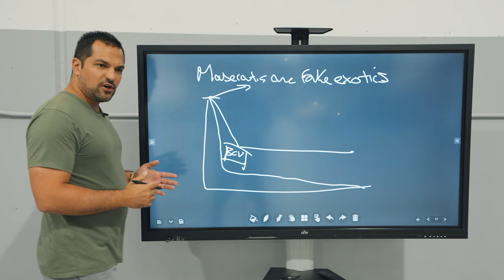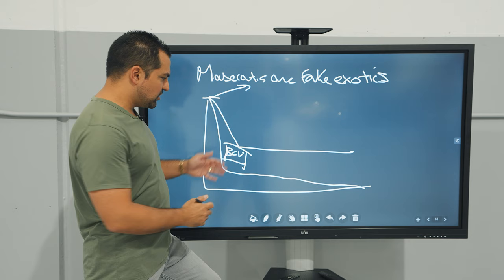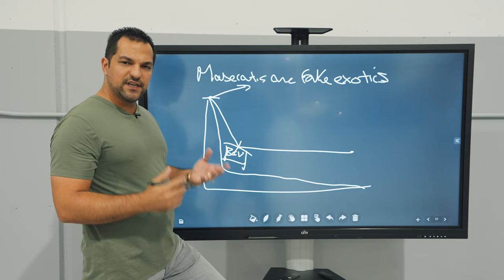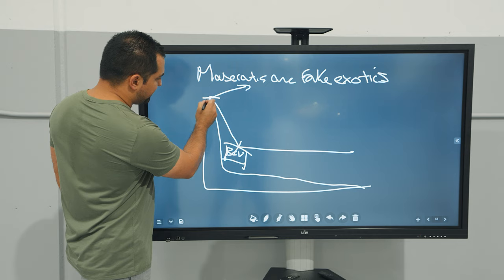However, exotic cars are assets because they stabilize and hold. Now Maseratis do something very interesting. Not only are they exotic looking and exotic priced, but they follow a depreciation curve like a normal dead car, which means that they're eventually basically worth zero.